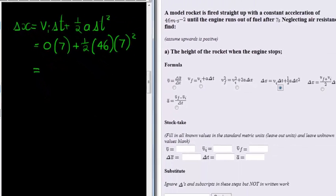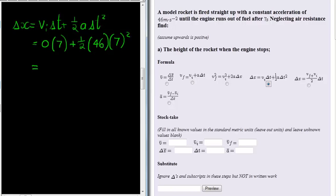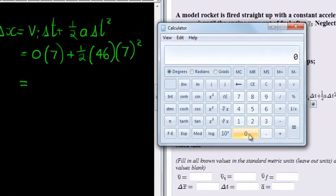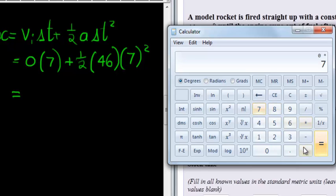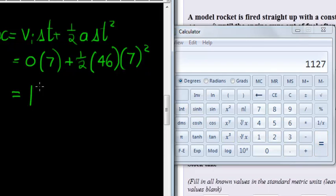This all we need to do is solve this using our calculator. So let's do that and that gives me zero times seven will obviously be zero plus 1 divided by 2 times 46 times 7 squared gives me a total of 1,127 meters.